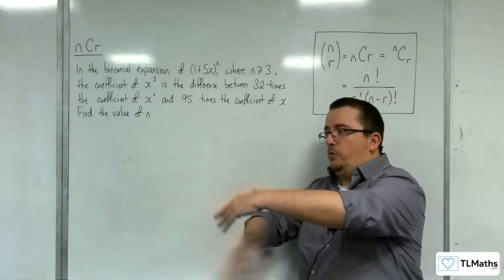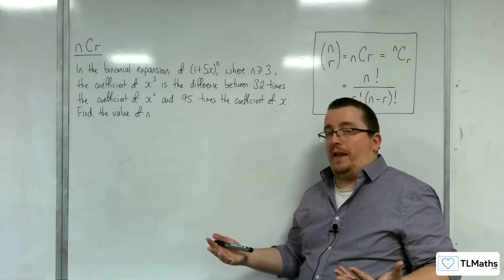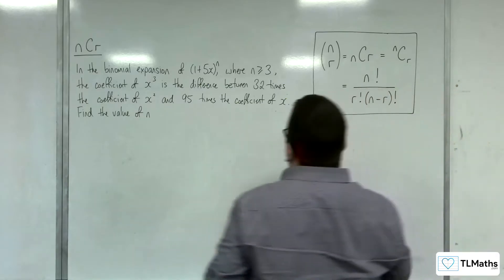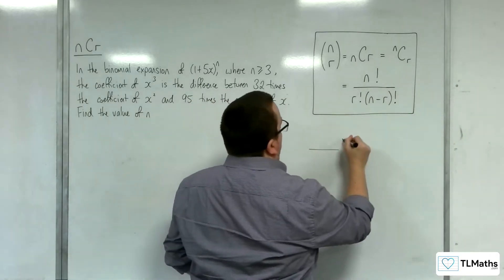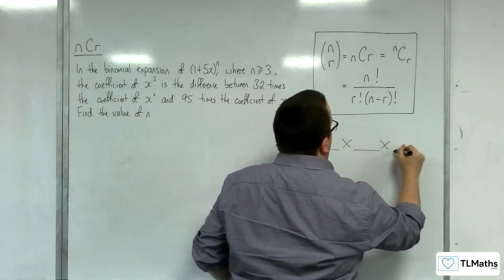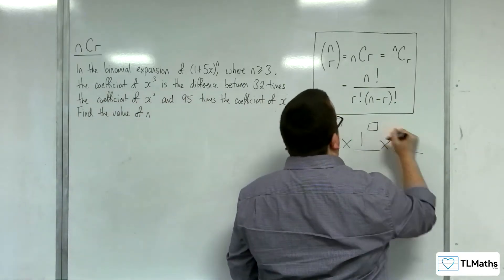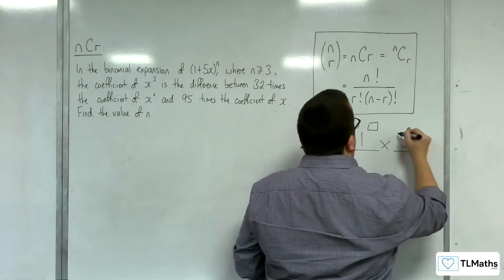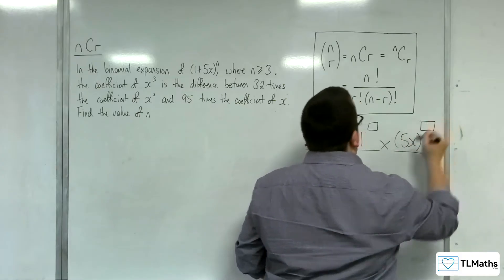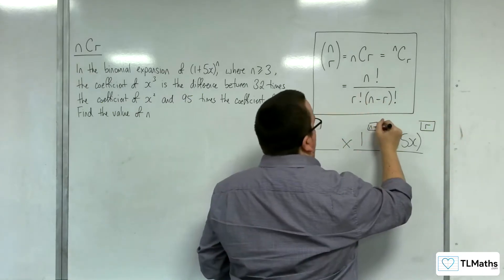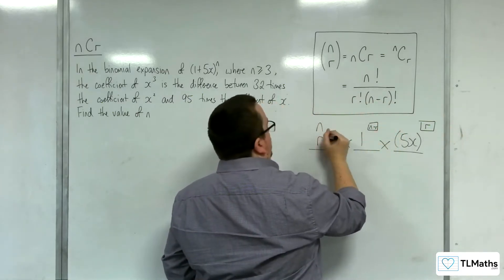So with the two previous examples, we've had 1 plus x to the n. This time we've got 1 plus 5x to the n, so we've got to be a little bit more careful. The coefficient is not just going to be made up of the nCr, because we've got 1 to the power of something and 5x to the power of something. This is the power of r, that's the power of n minus r, and we're going to have n choose r.